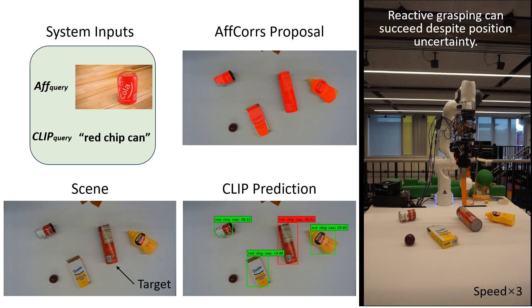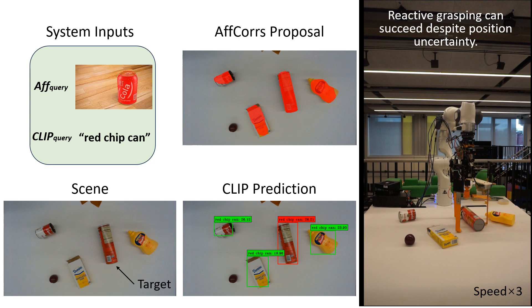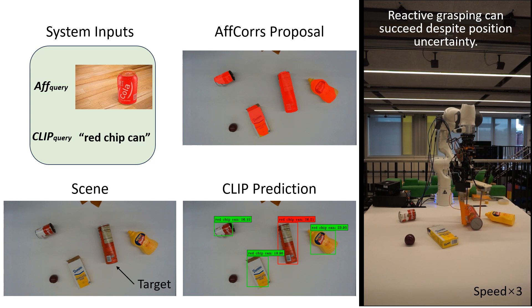Notice that the object is actually moved by the gripper during the approach. The object is no longer in the target position that was given to the grasper, so the controller has to compensate. Using feedback, it adjusts the grip of the grasp in order to achieve a stable final grasp.